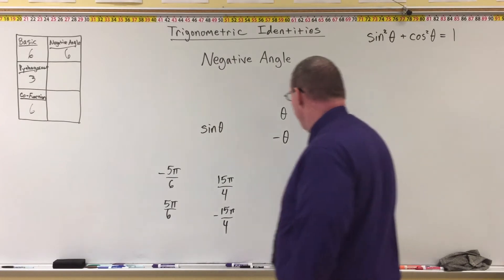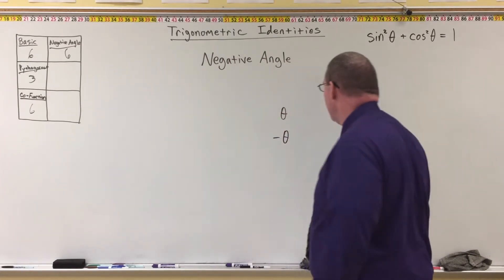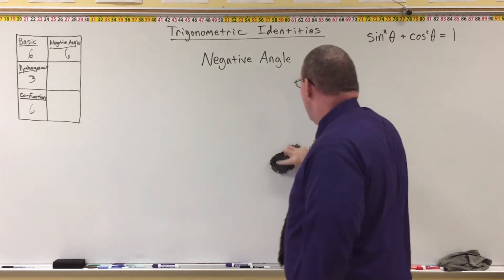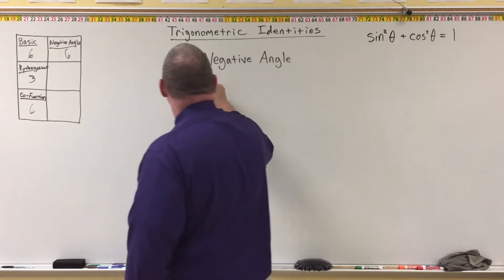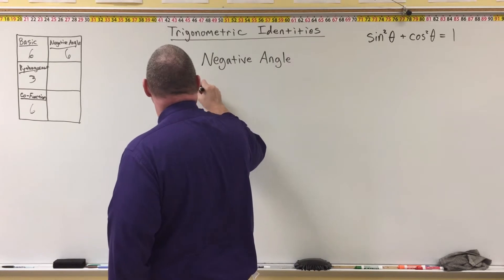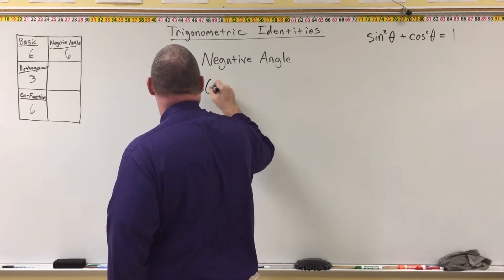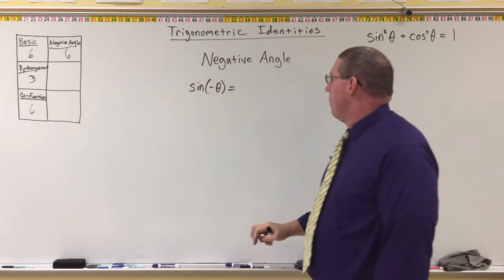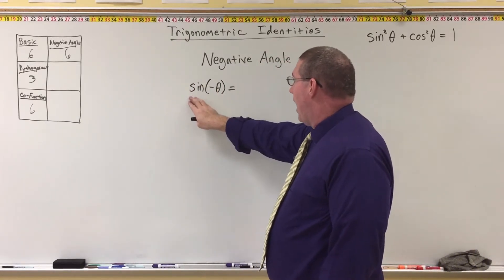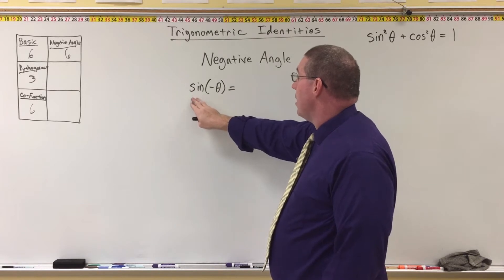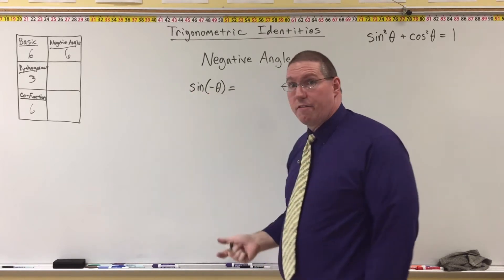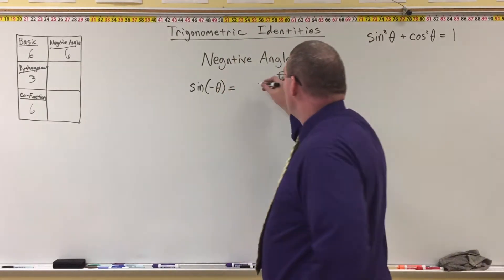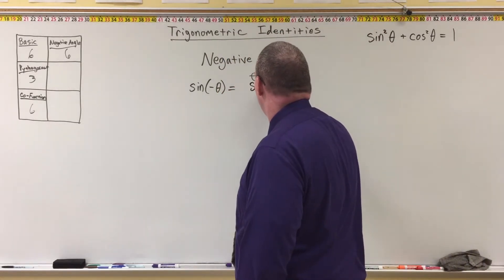So what we're dealing with here when we say negative angle, we mean that instead of theta, we have negative theta. So the first negative angle identity is going to be sine of negative theta. This is an identity where if we have the sine of an angle, but it's sine of negative theta — did you know that sine of negative theta is related to sine of theta?